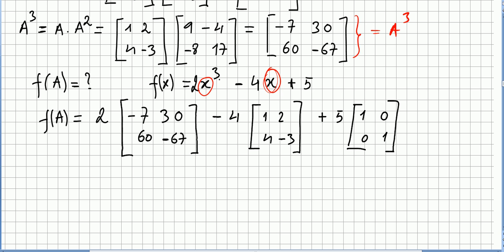So for 2x to the power of 3, we use, so f of A will be 2. So I'm using A to the power of 3, that's minus 7, 30, 60, minus 67.